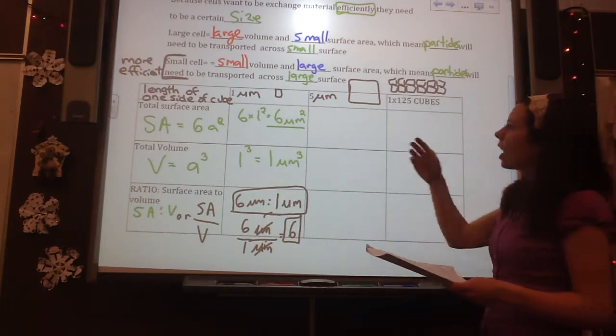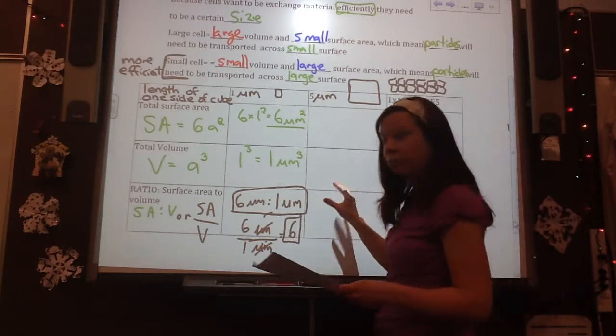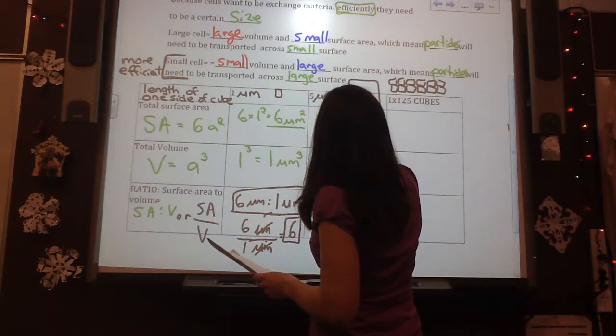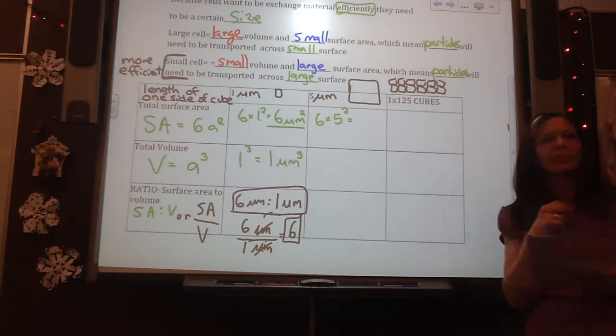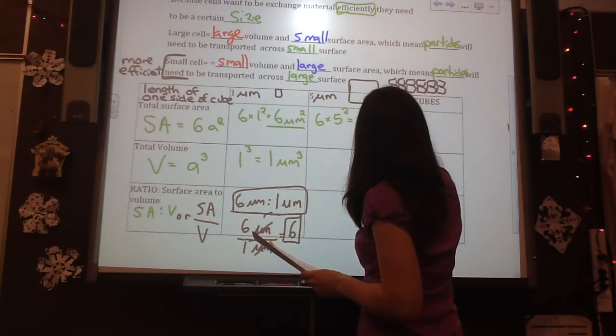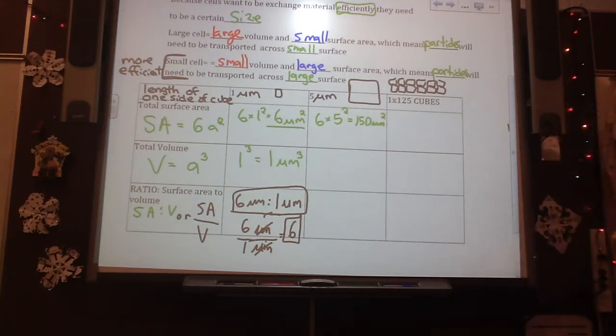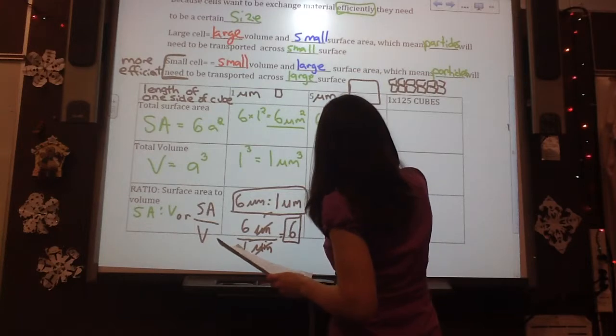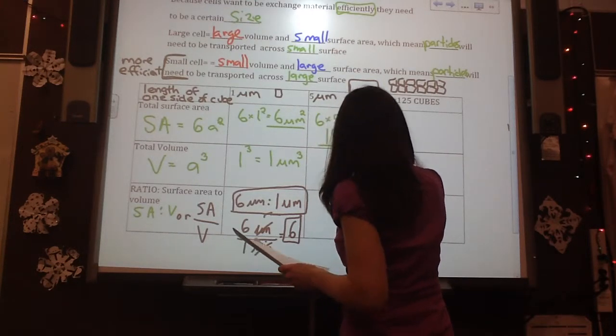So let's say now we compare a bigger cell. This is a larger cell. So if I have then six times five micrometers squared, what will that equal? Six times five. 150, yeah. So 150 micrometers squared. I'll just write it down below a little bigger. 150 micrometers.